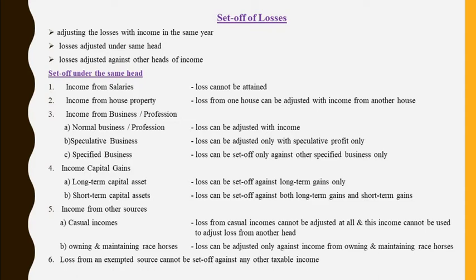The next head of income is income from business or profession. For the purpose of set-off, I am classifying this into three types: normal business or profession, speculative business, and specified business. When the assessee is doing a normal business activity or a normal profession and incurs a loss, he can adjust that loss with any other business income, professional income, or speculative business income. Under a speculative business, if the assessee incurs a loss, that loss can be adjusted only with some other speculative business profit.